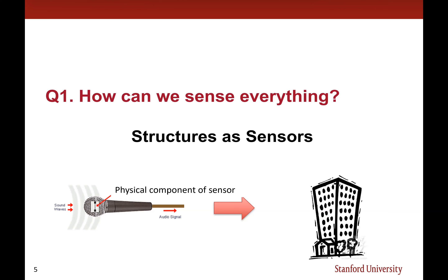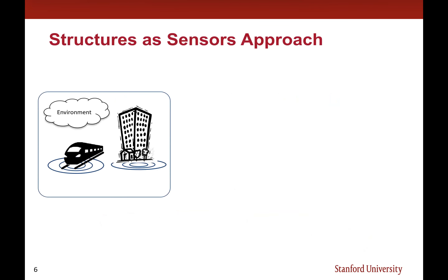To explain this concept, let me give an example. In a microphone, the physical component is the small diaphragm inside that vibrates as sound waves come in — it responds to the excitation source and transfers it to an electrical signal. Similarly, instead of using a small diaphragm, we're going to use the entire building structure or transportation structure as a physical component of the sensor, receiving information from the structure, human users, or surrounding environment, then transferring it to an electrical signal.